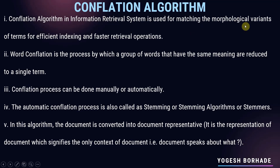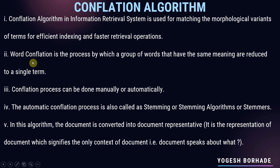Word conflation is the process by which a group of words that have the same meaning are reduced to a single form. Words having the same meaning but expressed in different forms are called conflations, and that process is called conflation. The conflation process can be done manually or automatically. The automatic conflation process is called stemming, or stemming algorithms, or stemmers.